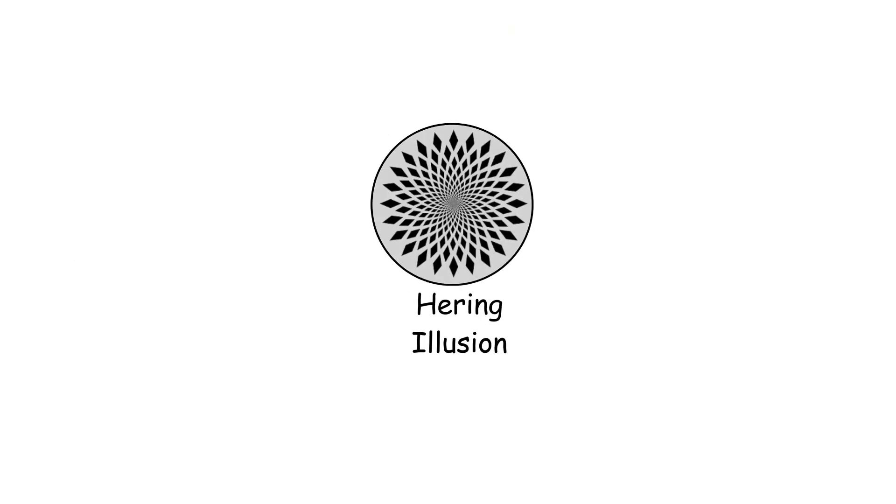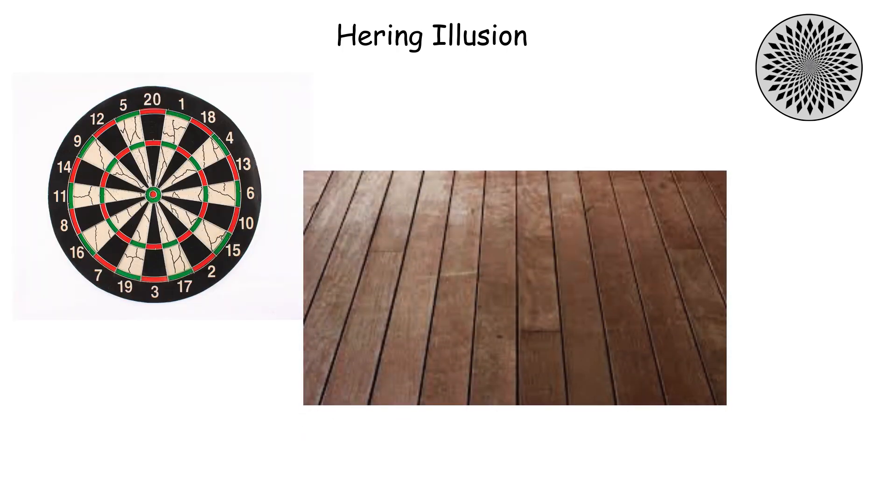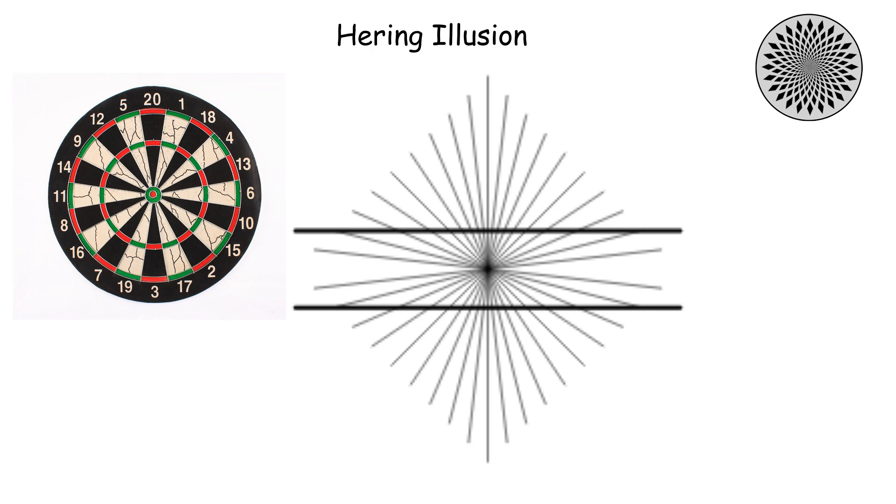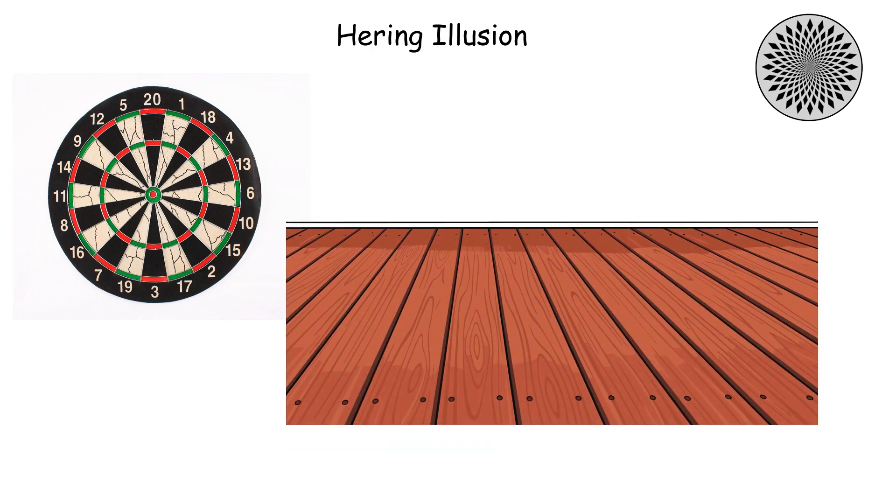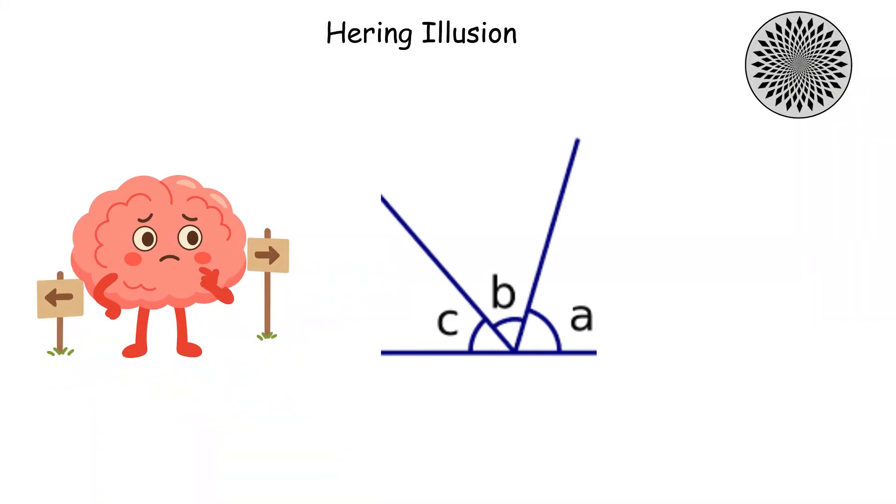The Hering Illusion. Let's say you're looking at a dartboard on the wall, and the lines on the floorboards behind it suddenly look like they're bending outward around the dartboard, even though you know floorboards are straight. That's the Hering illusion messing with your perception, and it's like your brain decided geometry rules don't apply anymore.